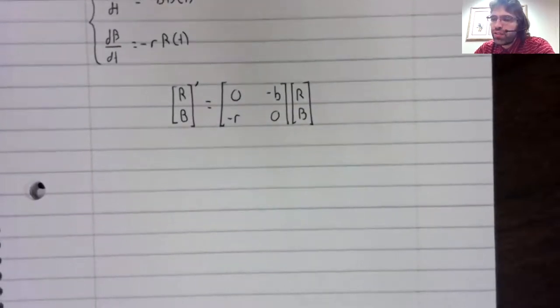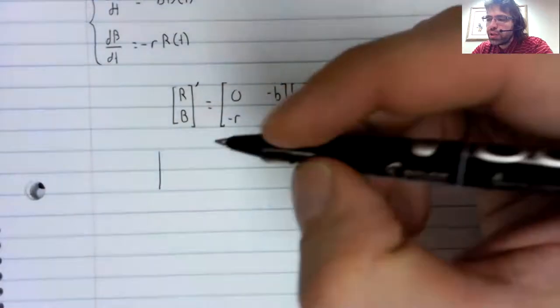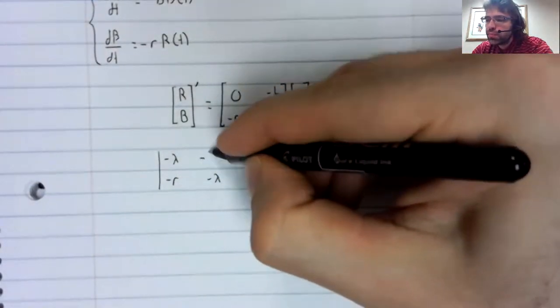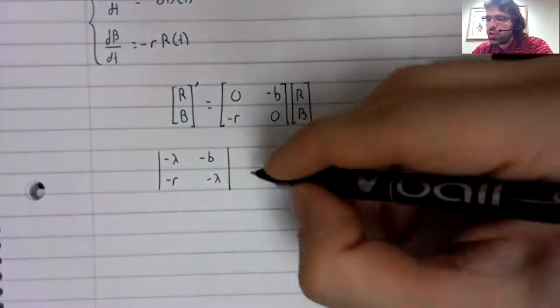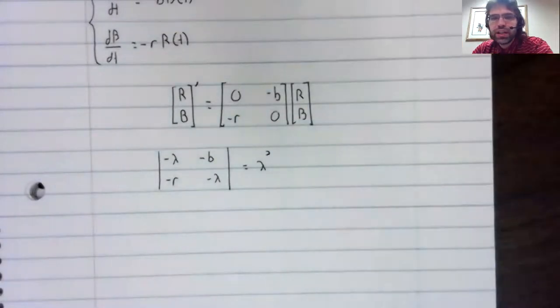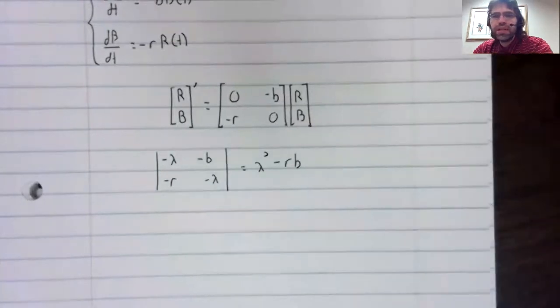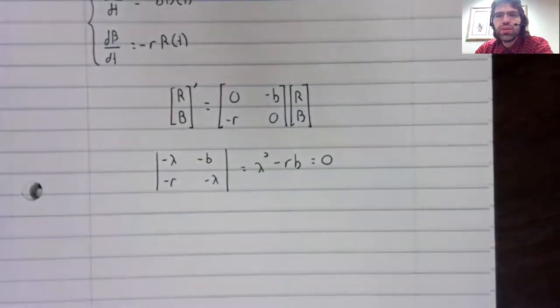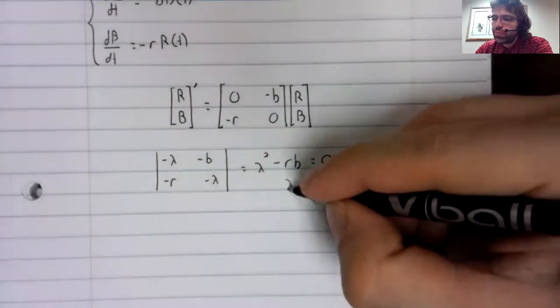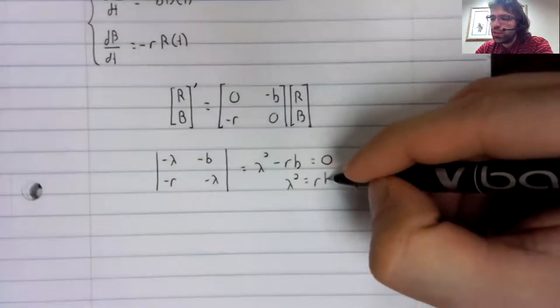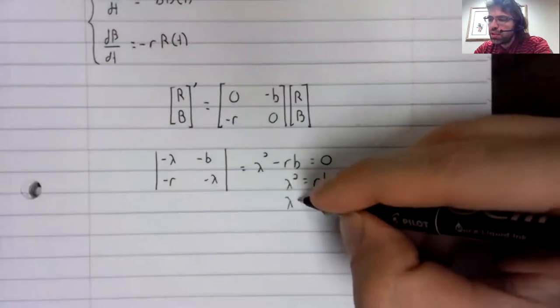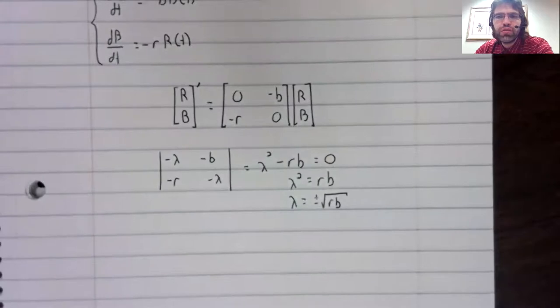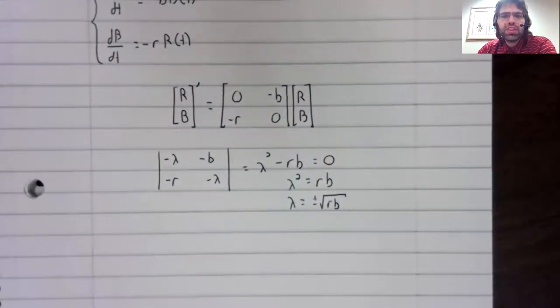We'll find the eigenvalues in particular. We'll subtract the lambda I, and we'll take the determinant. And we get lambda squared minus r b. And to find the eigenvalues, we set that equal to zero. Lambda squared equals r b. Lambda equals plus or minus the square root of r b. So two real eigenvalues.